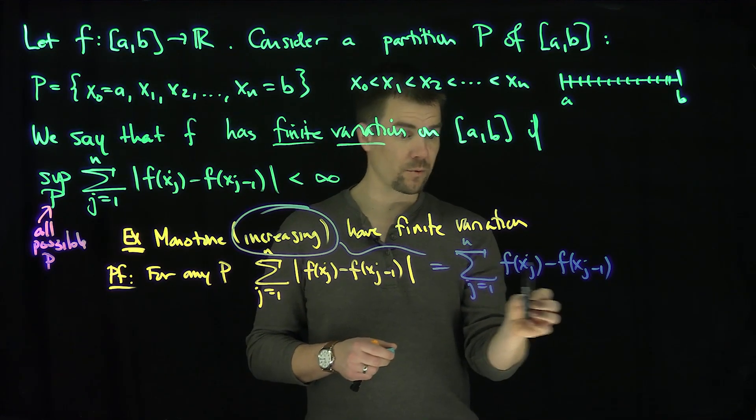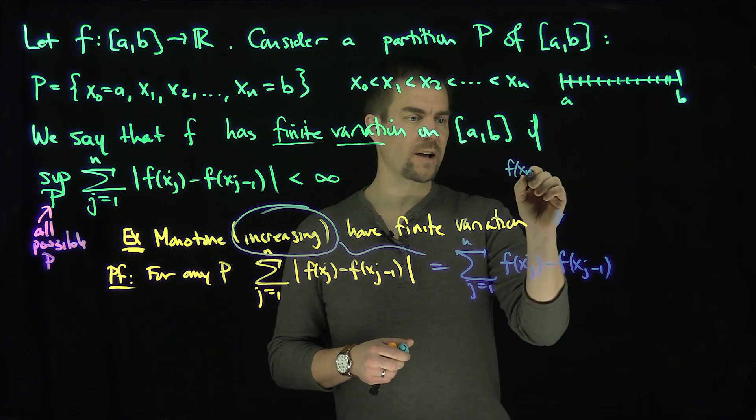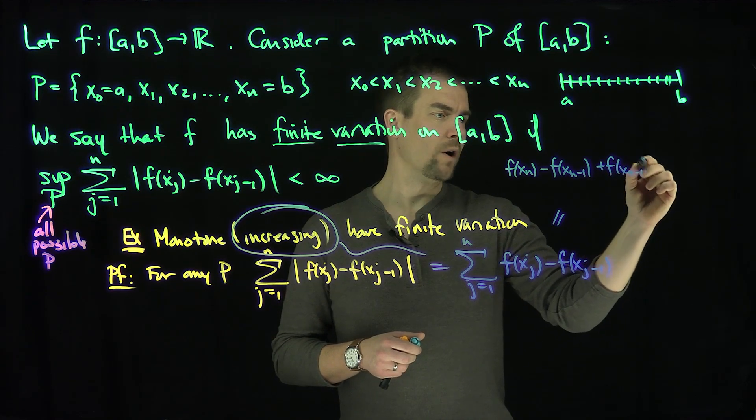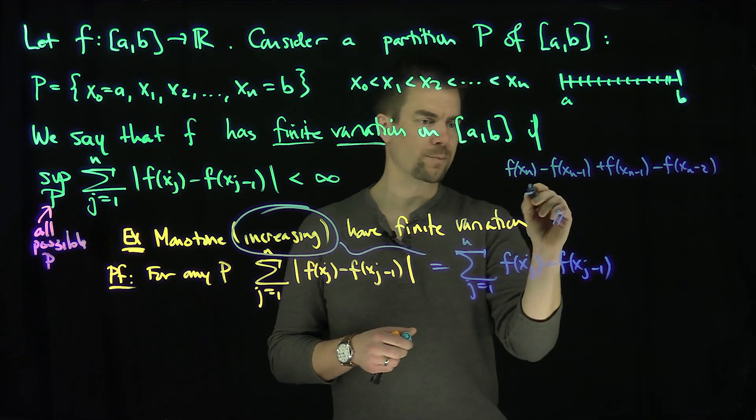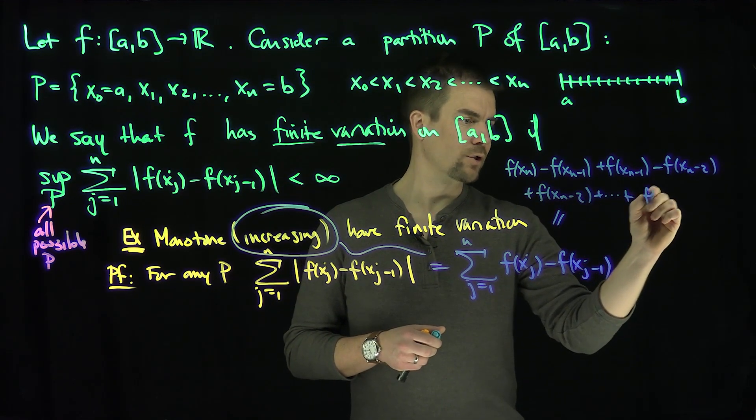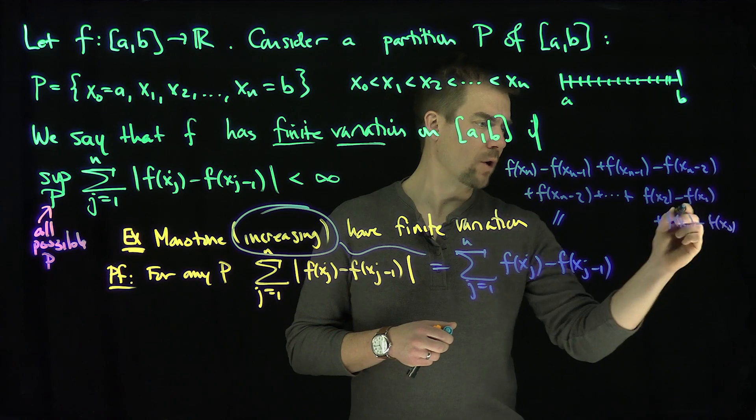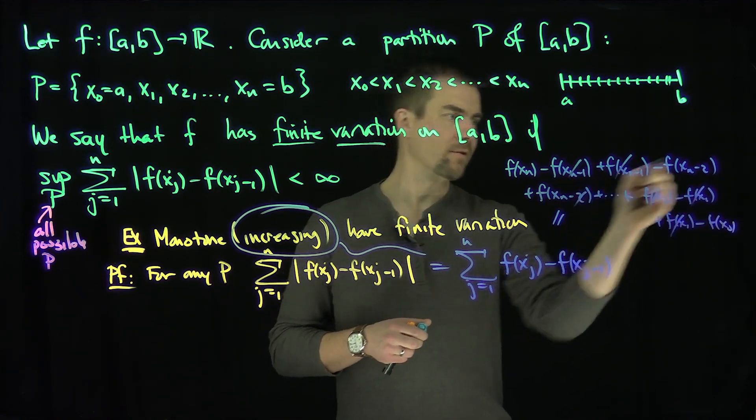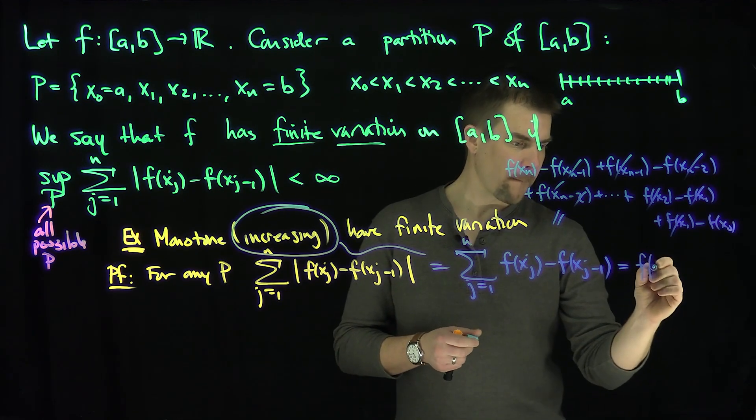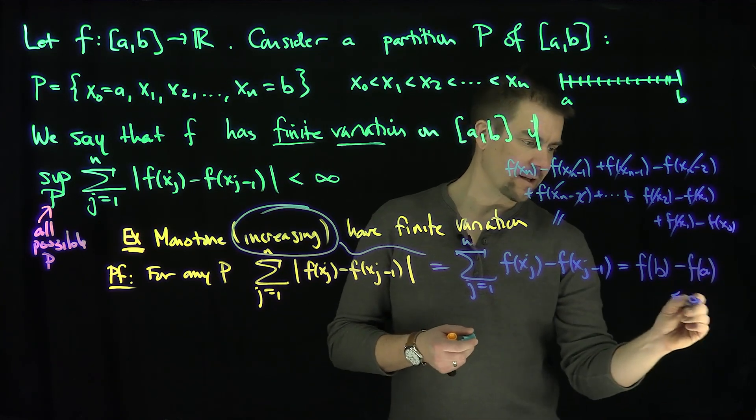I'll have f(x1) - f(x0), f(x2) - f(x1), so they're all going to cancel out. This looks like f(xn) - f(xn-1) + f(xn-1) - f(xn-2) + ... + f(x2) - f(x1) + f(x1) - f(x0). All the terms except for the very last and very first cancel out. So this collapses to f(xn), which is b, minus f(x0), which is a, and that's clearly less than infinity.